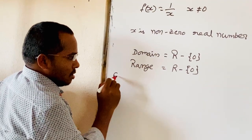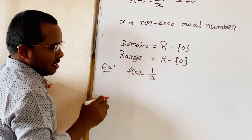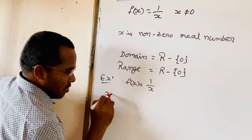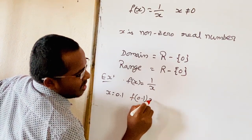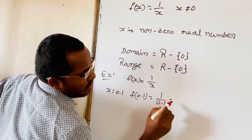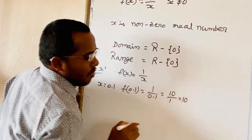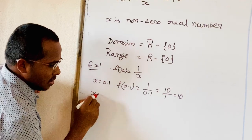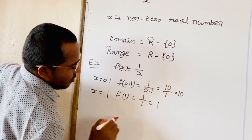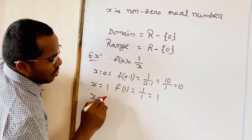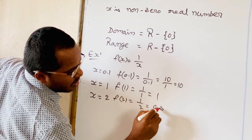So f of x is equal to 1 by x. If x takes the value 0.1, then f of 0.1 is equal to 1 by 0.1, which equals 10. If x is equal to 1, f of 1 is equal to 1 by 1, that is 1. If x is equal to 2, f of 2 is equal to 1 by 2, that is 0.5.